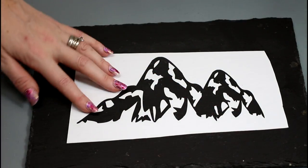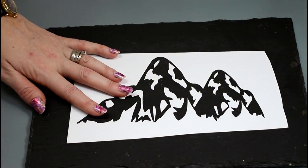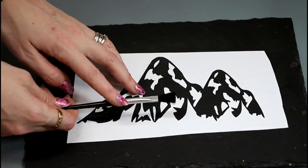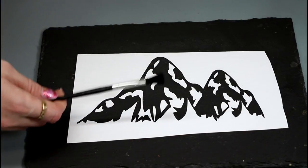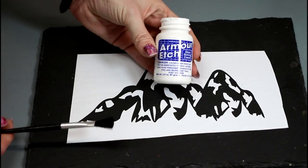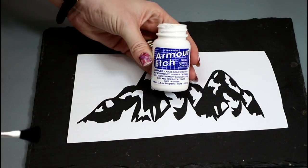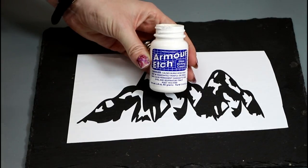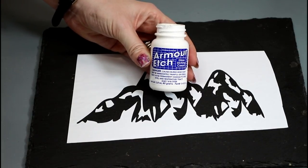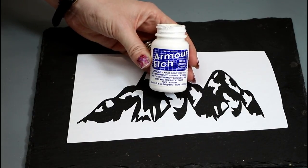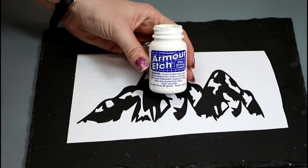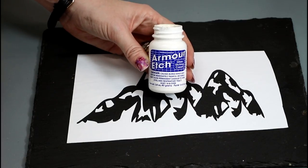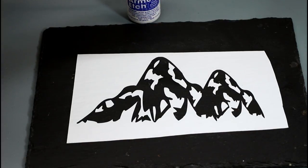So once your 651 stencil is fully adhered to your slate, you're going to get yourself a fluffy brush, and I do find that a fluffy brush works best. I've also got some Armor Etch cream. Now I find that this stuff is really pungent, and I don't know if it's just me, but I would advise using this in a well ventilated room because as I say, I find it really noxious.